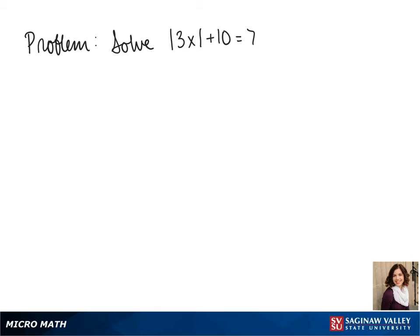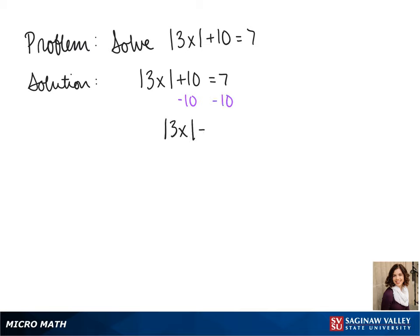Welcome to another day of algebra. Today we'll be solving the absolute value of 3x plus 10 equals 7. Our first step will be to get the absolute value by itself on the left side, so we subtract 10, and we get the absolute value of 3x equals negative 3.